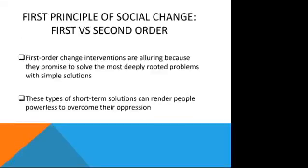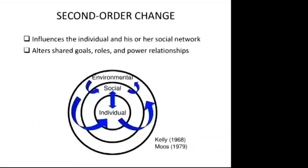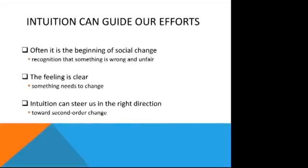The first principle is that we need to move away from first-order change. First-order change approaches just focus on the person and are like band-aids — cosmetic short-term fixes that rarely address the root of the problem. First-order strategies are alluring because they promise to solve the most deeply rooted problems with person-centered, simple solutions. But these types of interventions render people powerless to overcome their oppression. In contrast, second-order change influences individuals and their social networks, as well as all the other components of their environments that may contribute to the particular problem. But how do we bring about second-order change?